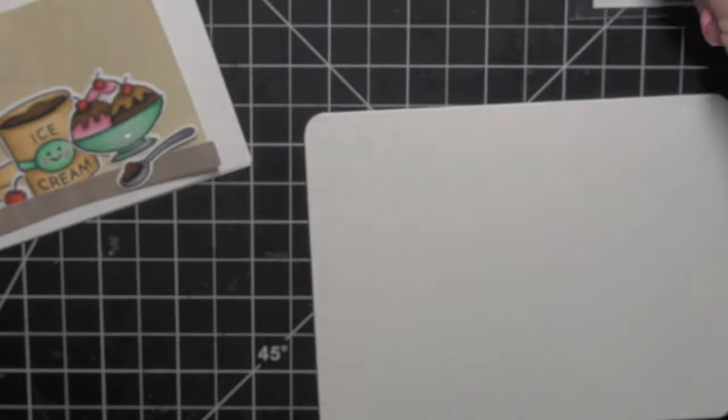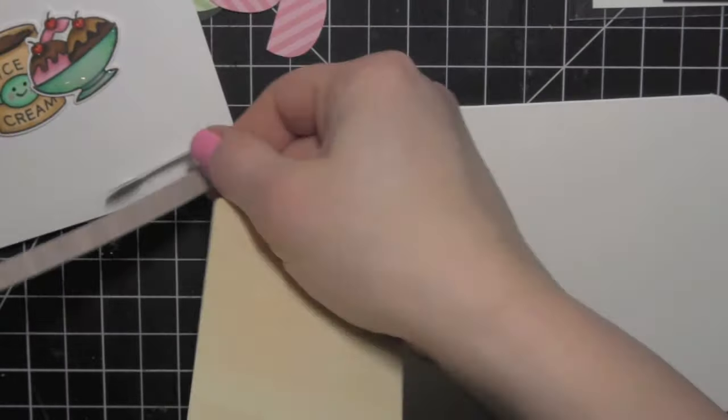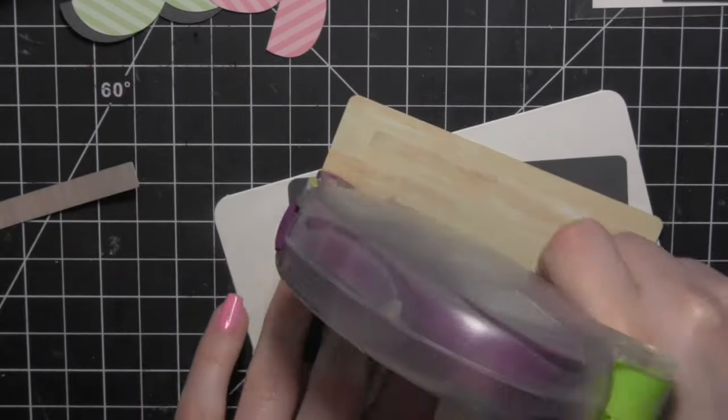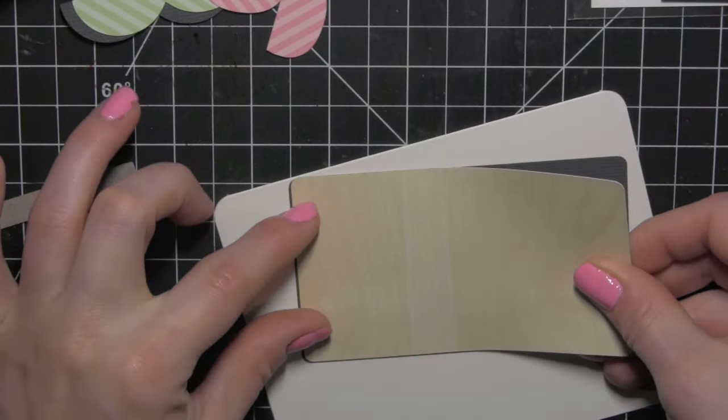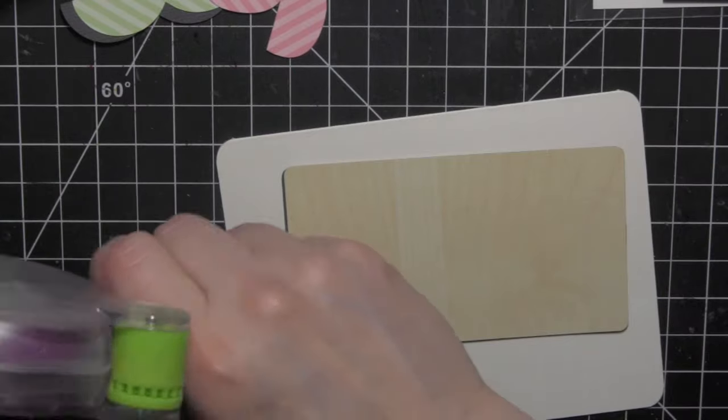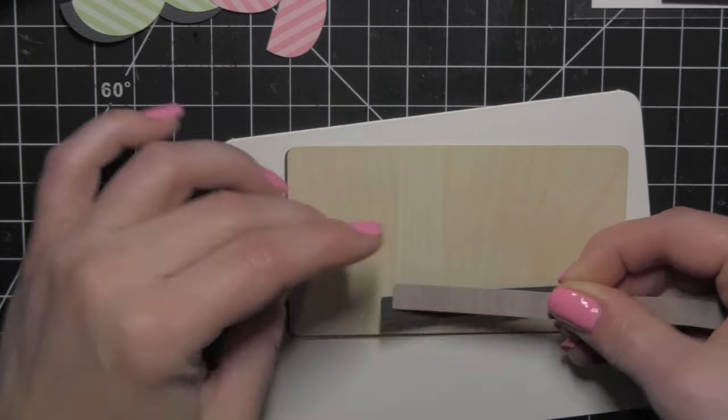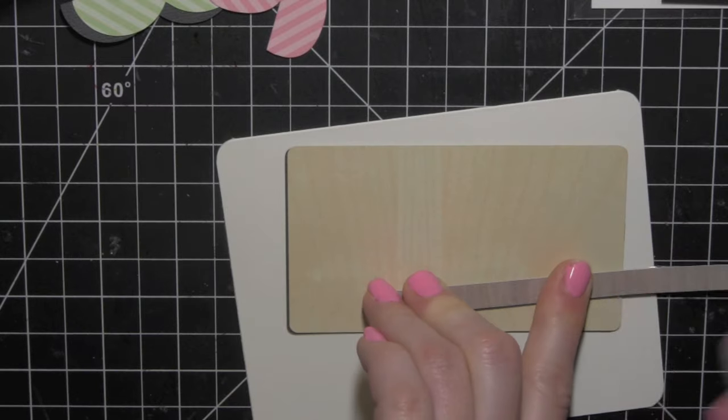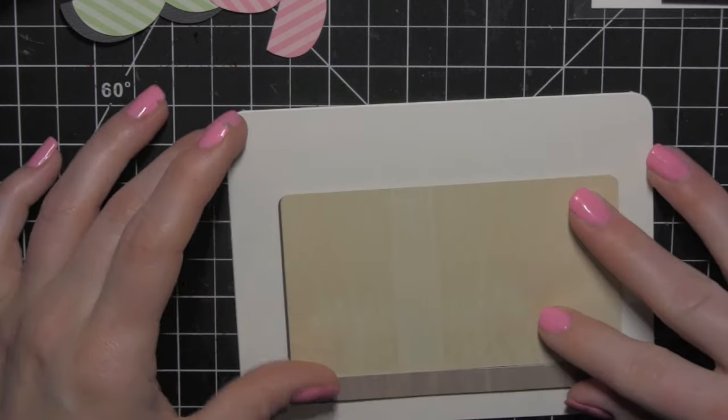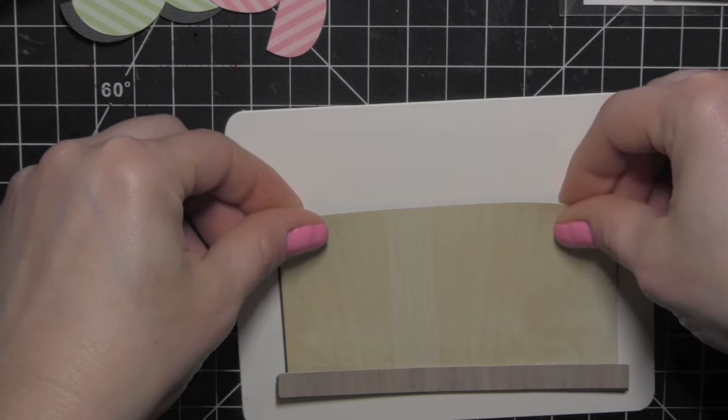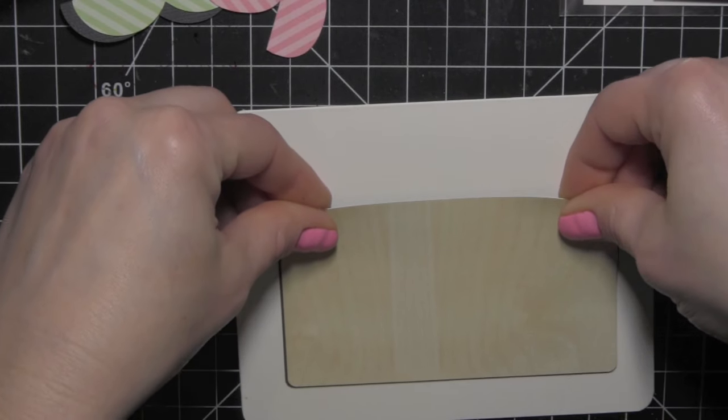The card base is out of some cream Simon Says Stamp cardstock and I rounded the corners with a quarter inch corner rounder. For the ice cream shop window I found a design in the Silhouette online store. It was actually an ice cream truck image but I just used the window because I felt like it was fairly simple so it's going to still keep the emphasis on the cute little ice cream dishes and ice cream bucket and everything.